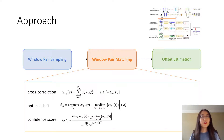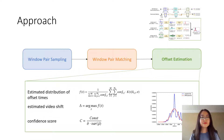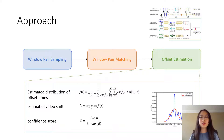We evaluate two versions of our algorithm: using the x-axis of both data streams, and using the PCA-projected data. The final step uses weighted kernel density estimation to combine noisy estimates of the shift produced from multiple accelerometry-video window pairs to obtain an accurate estimate.